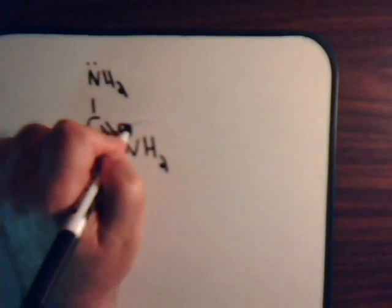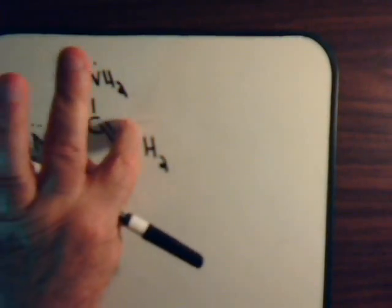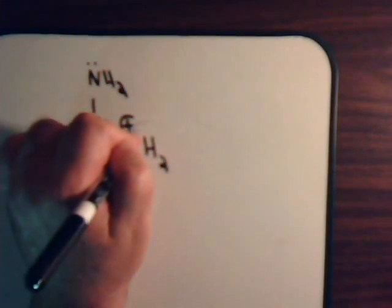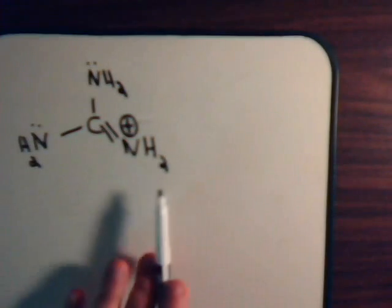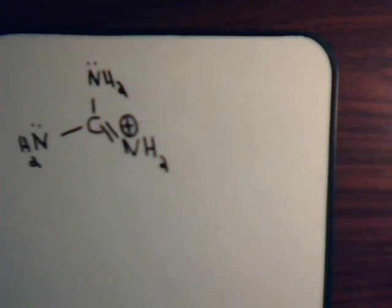That now is a protonated guanidine molecule, with a positive charge on this nitrogen. So this had a lone sp2 electron pair — you put it in acid and the proton attaches there. Now we have the protonated form of guanidine. What resonance structures can we draw with this?